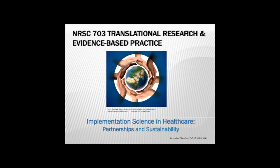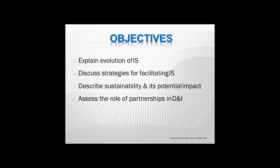Those are some of the reasons why implementation science is moving along quicker. Tonight we are going to look at the evolution of implementation science, some of the strategies that facilitate it, sustainability issues and their impact, and the role of partnerships in both dissemination and implementation. We want to be aware that dissemination is in a different space than implementation because of progress and how scientists are working on it.